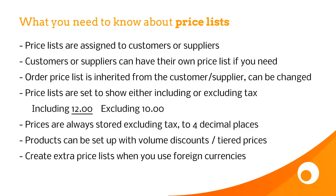Price lists are set to show either including or excluding tax. Underlined prices include tax, and prices without an underline exclude tax. In the UK for a retail customer, you'd probably include tax and show the price list as gross. In the US you'd probably exclude tax, and wholesale generally you always exclude tax.